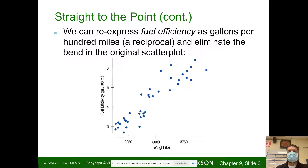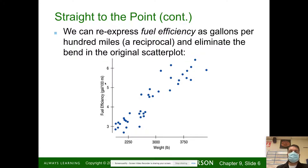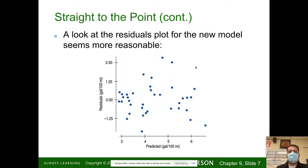We can re-express this fuel efficiency as gallons per 100 miles — a reciprocal — and eliminate the bend. So what they're doing is taking the weight and changing the fuel efficiency to gallons per 100 miles. It gives you a little bit better straight line. Now when you look at the residuals, the new model seems a little more reasonable than the previous one.